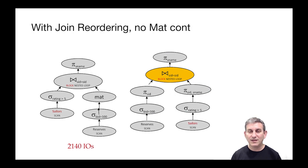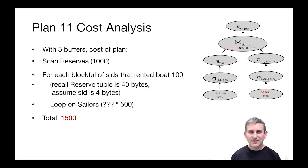Rather than cost out the previous plan, let's look at the cost of this plan where the thing on the left is just a single block to iterate on the thing on the right. We have five buffers to work with for our join. We're going to scan reserves, which is a thousand IOs, and then after the selection and the projection we're going to construct chunks for a chunk nested loops join. We're inputting SIDs that rented boat 100. The rental of boat 100 filters the input by one one-hundredth, because there are a hundred distinct boats and boats were equally likely to be rented.